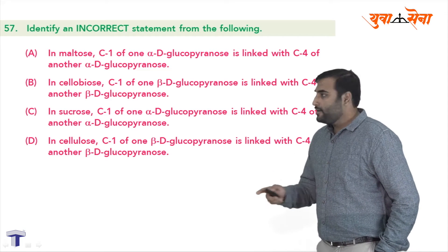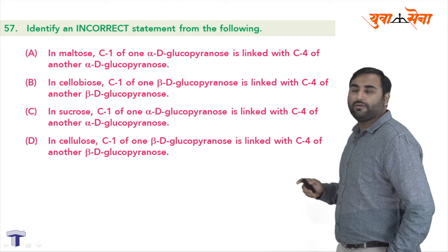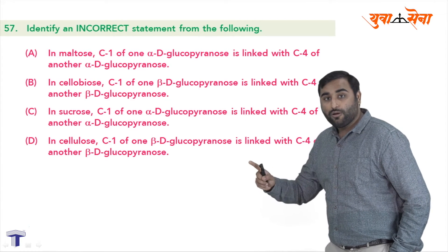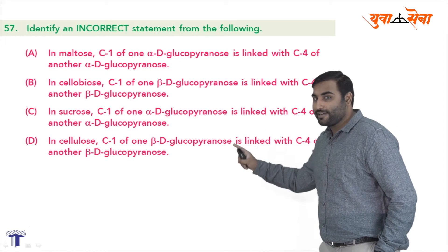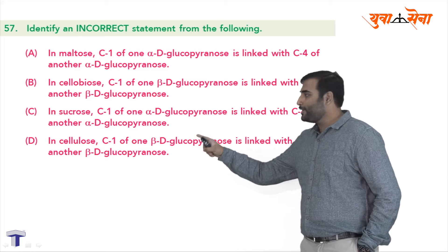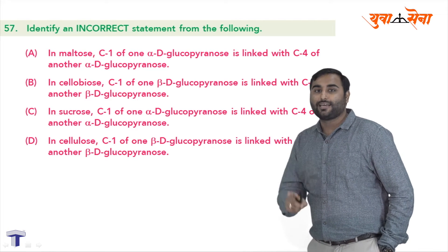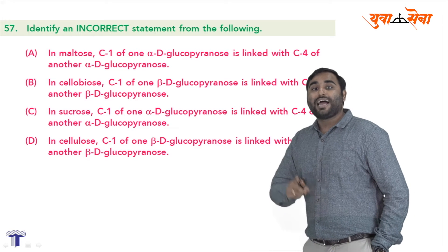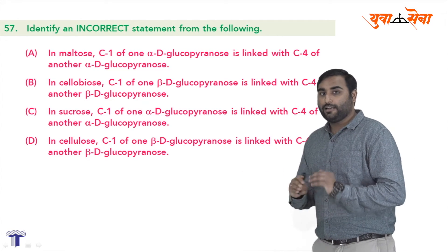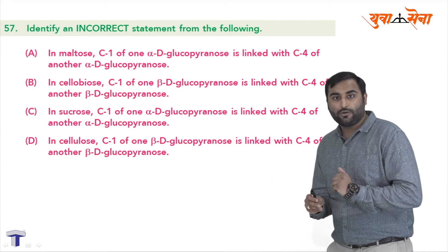Let us see option C. In sucrose, carbon 1 of alpha-D-glucopyranose is linked with carbon 4 of another alpha-D-glucopyranose. Please see this statement once again — there is a catch. The catch is that in sucrose mein yehan keh rahe hain ki dono glucopyranose structure hain, and we know that sucrose is a disaccharide made up of glucose and fructose. So right now hamare pas sahih jawab mil gaya hai, lekin hum aage bhaagna nahi hain, fourth statement bhi dekhna hai, because yehi galti hain jo hamesha CET mein log kar dete hain.